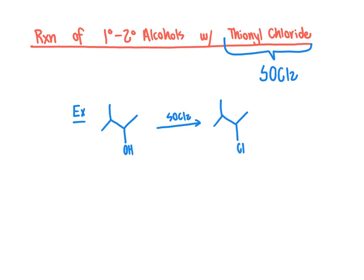In summary, converting primary or secondary alcohols into alkyl halides using HCl or HBr can be slow, tedious, and prone to carbocation rearrangements. By contrast, using thionyl chloride (SOCl2), phosphorus tribromide (PBr3), or phosphorus trichloride (PCl3), these reactions generally give good yields from primary or secondary alcohols without carbocation rearrangements — offering significant advantages over HCl or HBr.